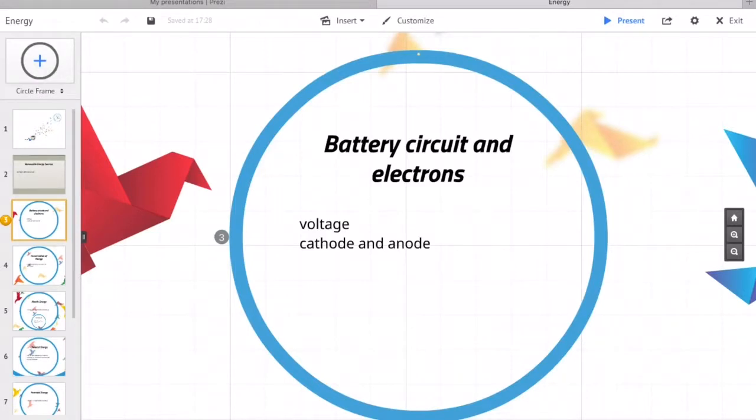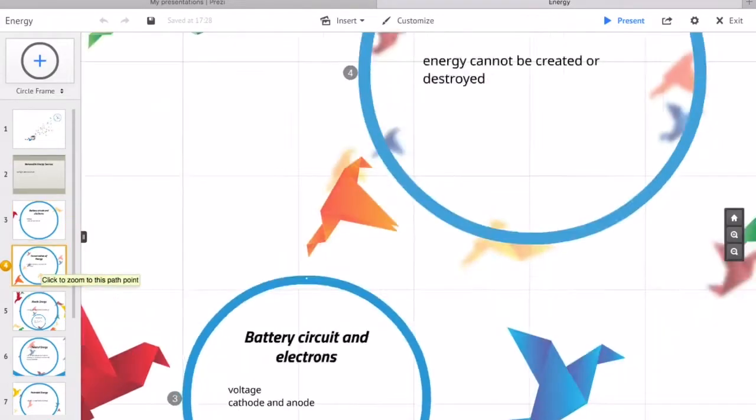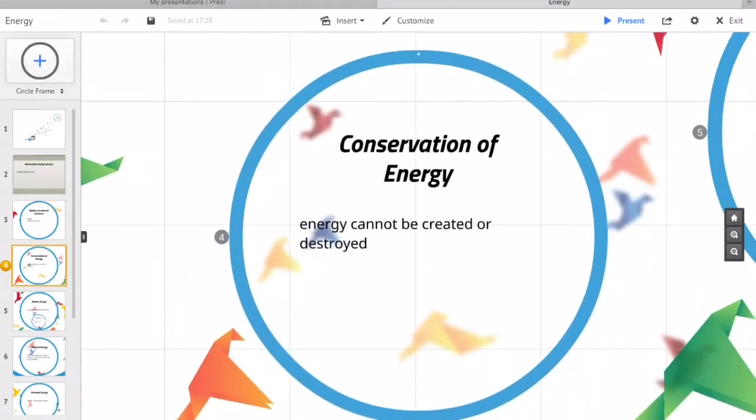Conservation of energy: the total energy of an isolated system remains constant. Energy cannot be created or destroyed, but can transfer into different forms, like for example, chemical to kinetic.